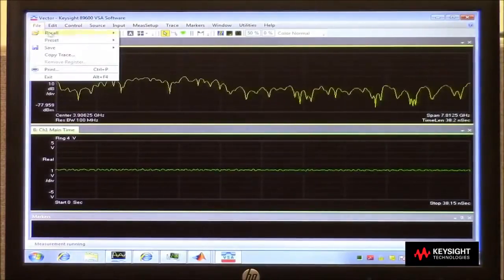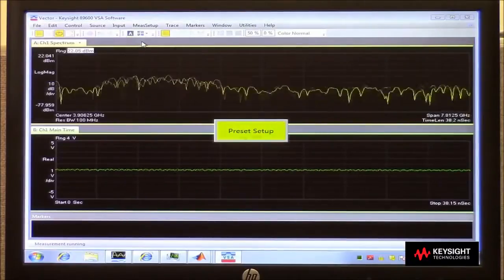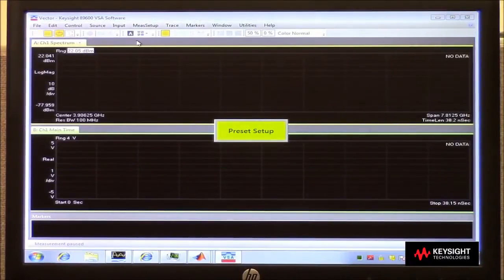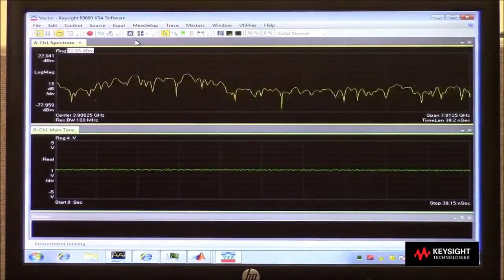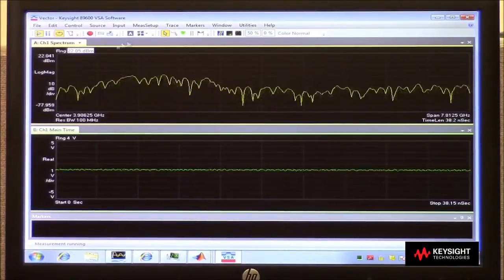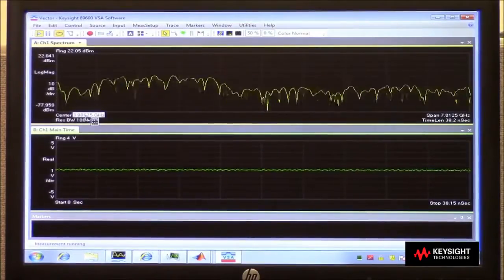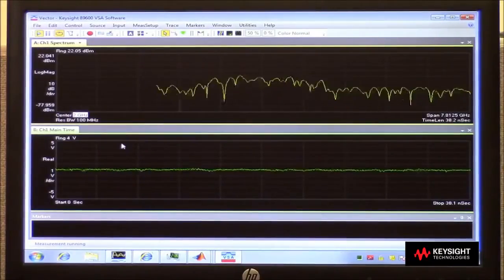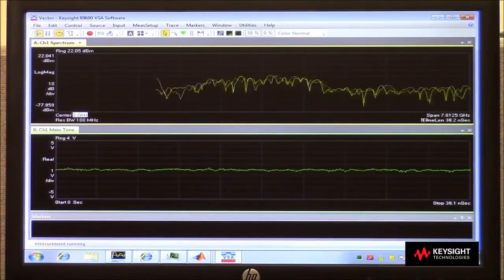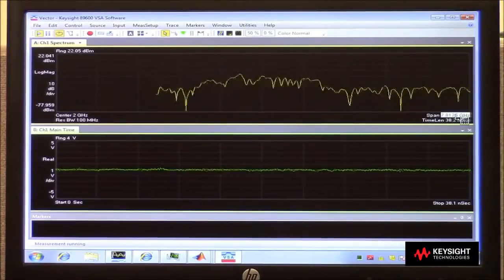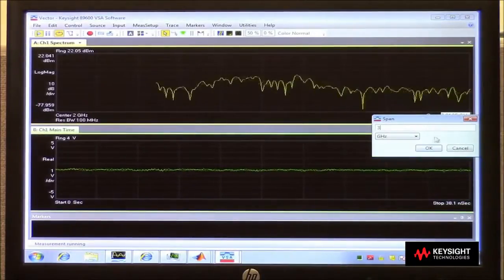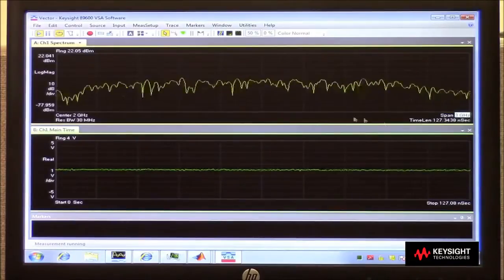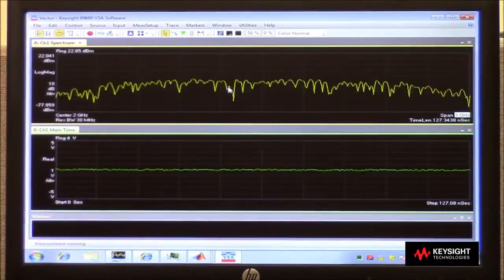We'll start with a preset setup in VSA. We expect to have a 2 GHz carrier, so we'll select a center frequency of 2 GHz. Since the signal should be about 2 GHz wide, I'll pick a span that's a little bigger than that. We'll go with 3 GHz. And I'm starting to see the signal now in this spectral view.